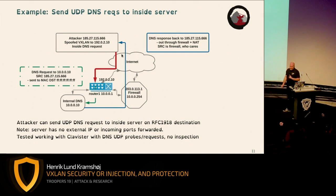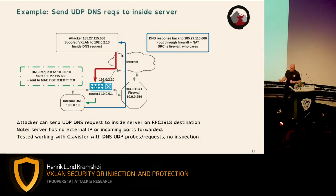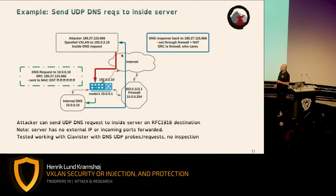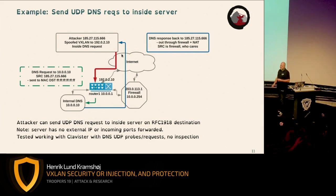This server does not have an external IP — no port forwardings. It only became accessible because of the VXLAN decapsulation happening with spoofed packets. I tested this working with Clavister firewalls. They don't have DNS UDP inspection, so they just see a UDP packet coming from the inside and allow it out — a very common configuration. Even if direct traffic to that IP was blocked, it might be possible to use another source port, since the server responds back to whatever source port was in the request.